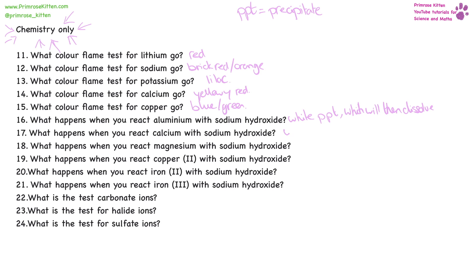Calcium will form a white precipitate. Magnesium will also form a white precipitate. Copper will form a blue precipitate. Iron two is going to form a blue-green-grey precipitate, whereas iron three is going to form a red-brown precipitate.